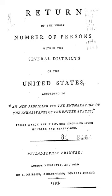Census data included the name of the head of the family and categorized inhabitants as follows: free white males at least 16 years of age, to assess the country's industrial and military potential; free white males under 16 years of age; free white females; all other free persons reported by sex and color; and slaves.